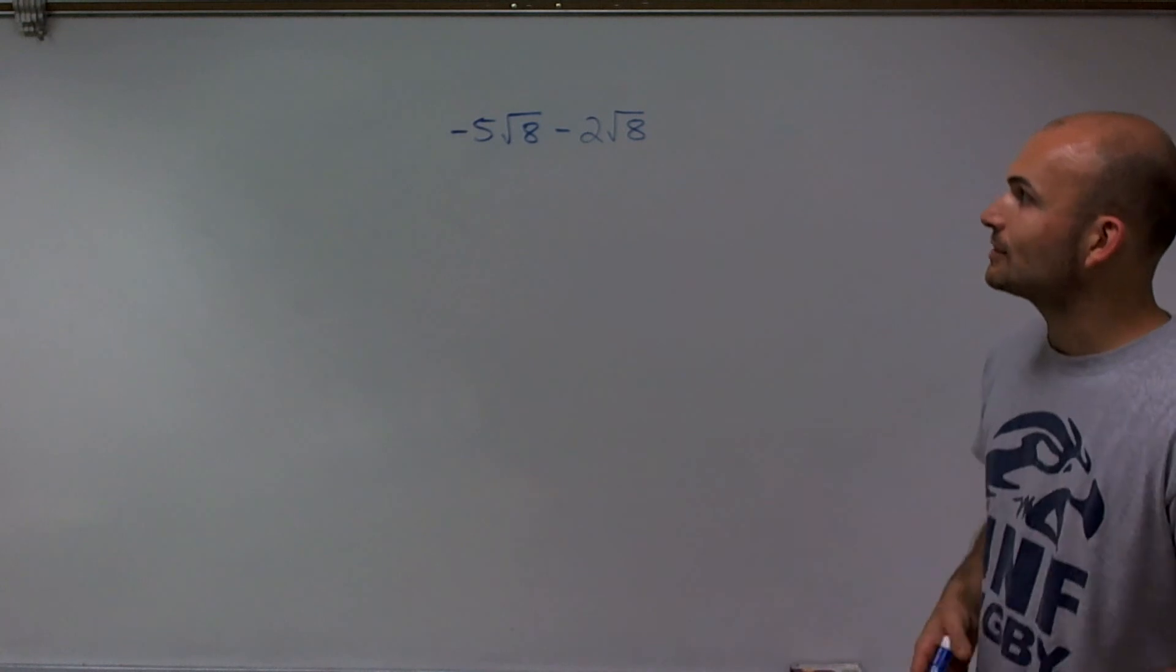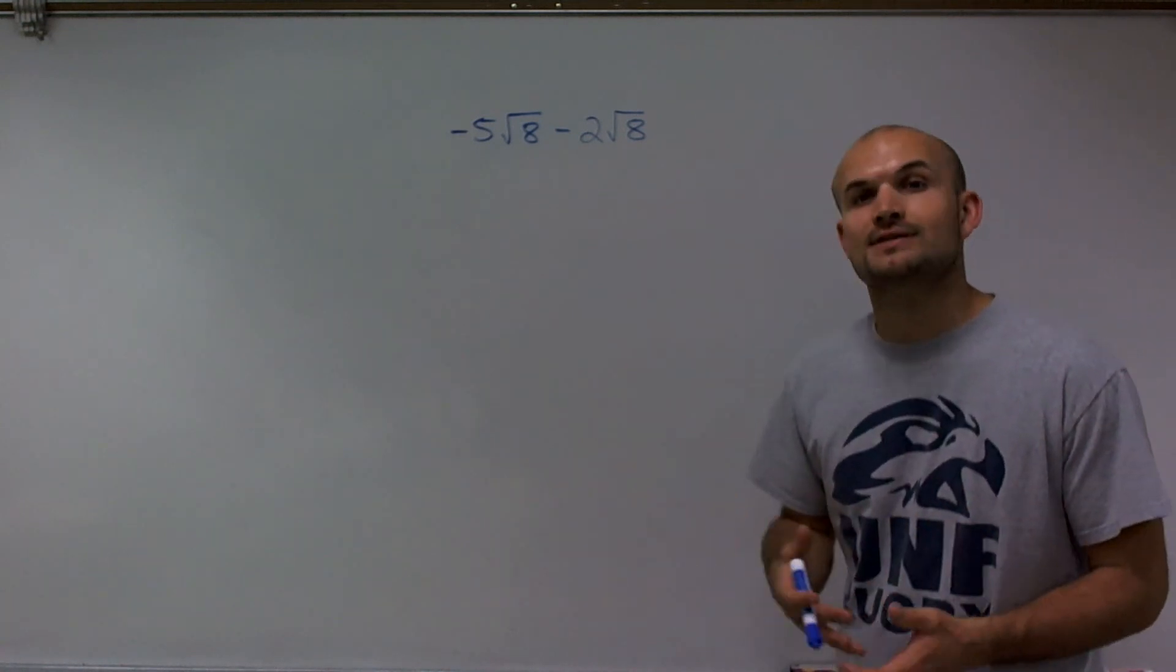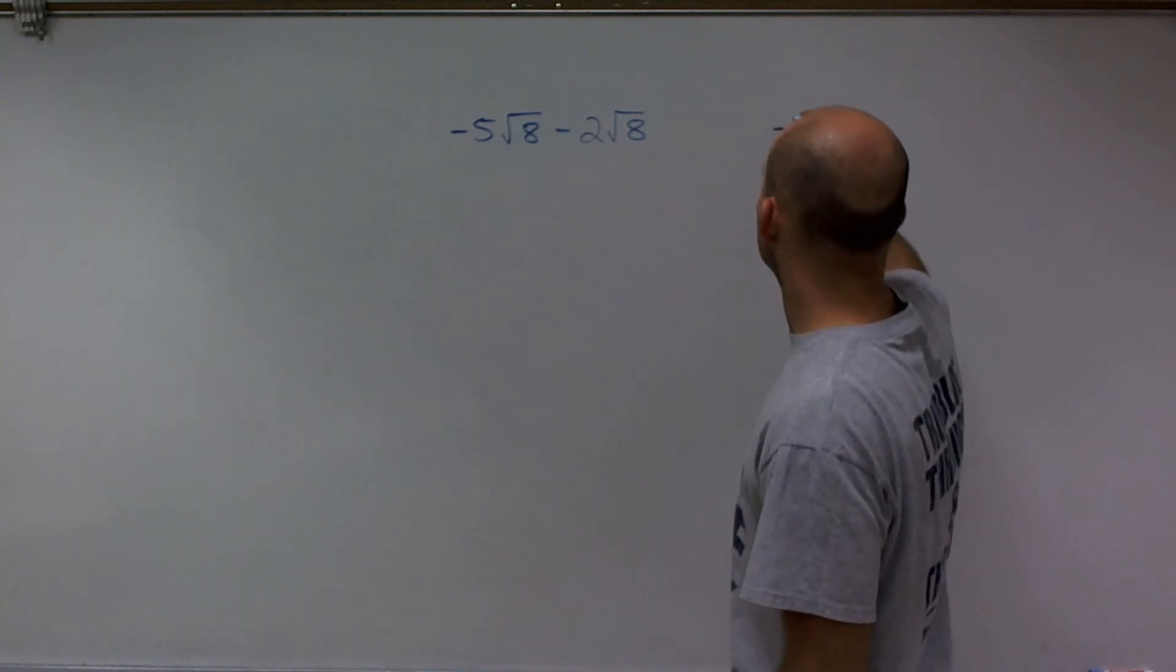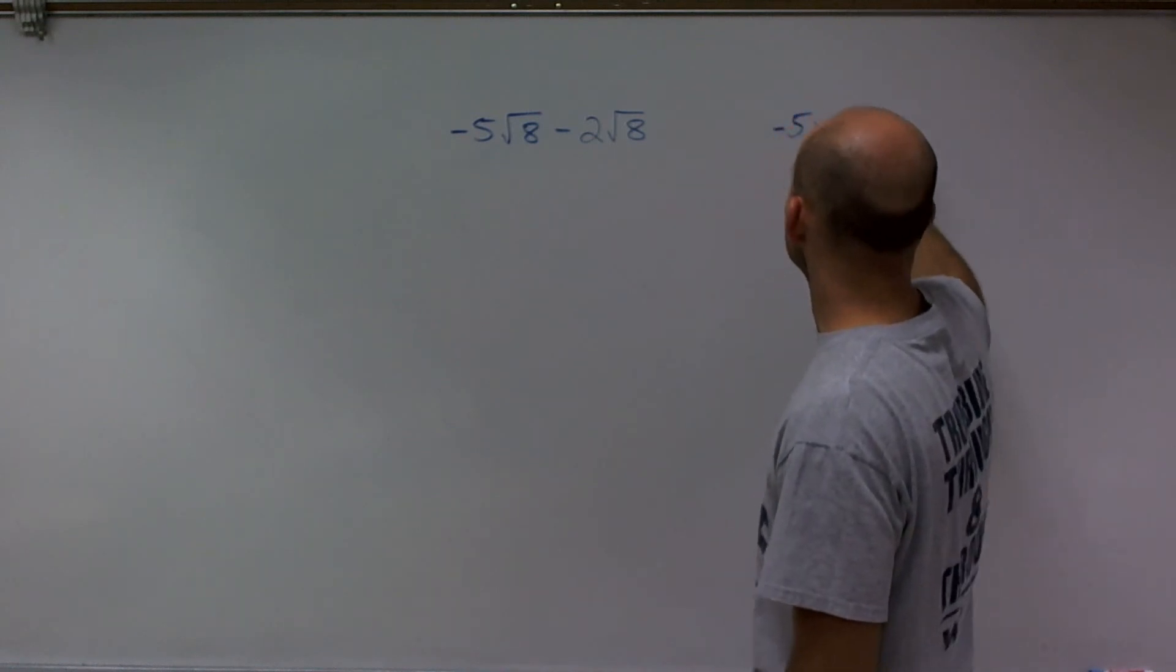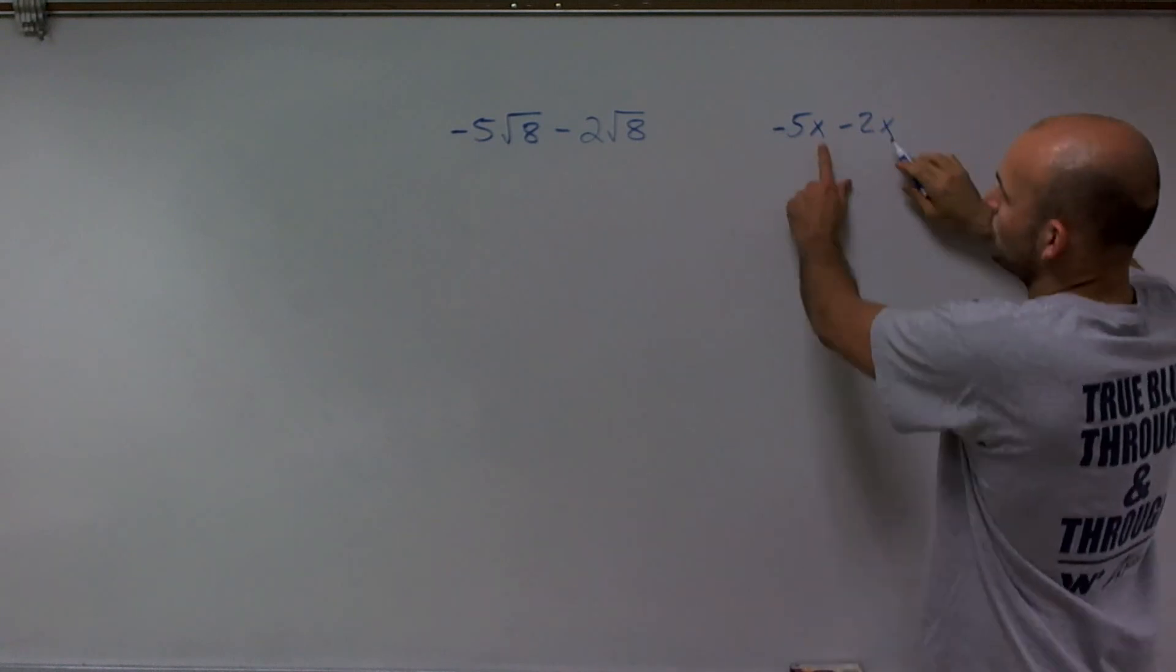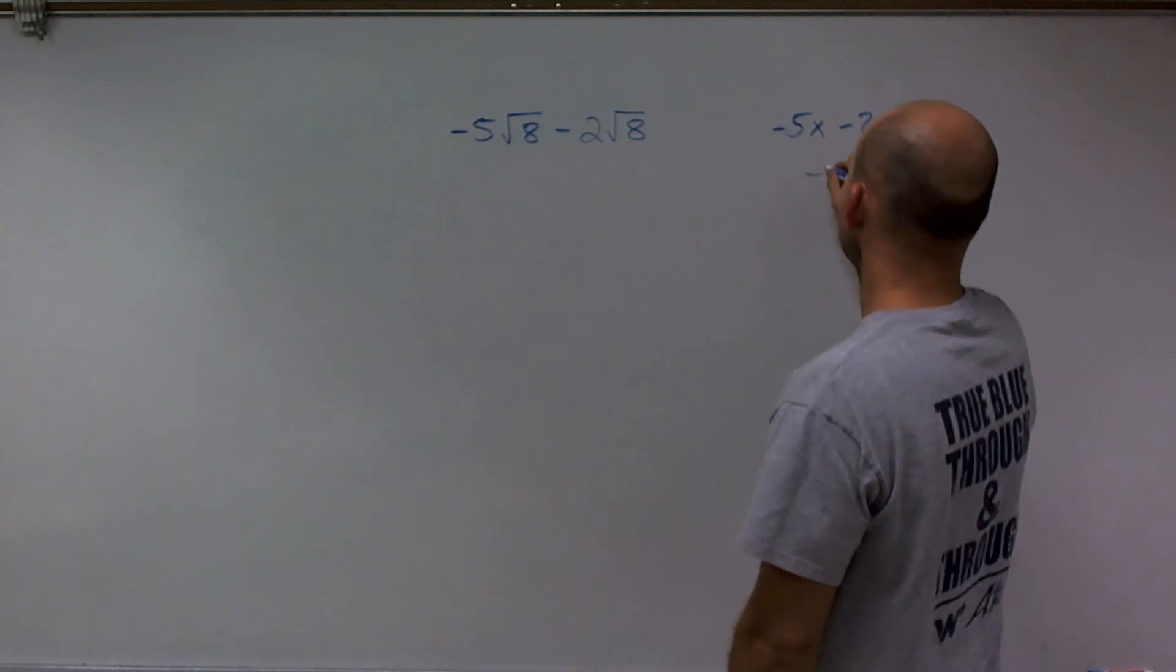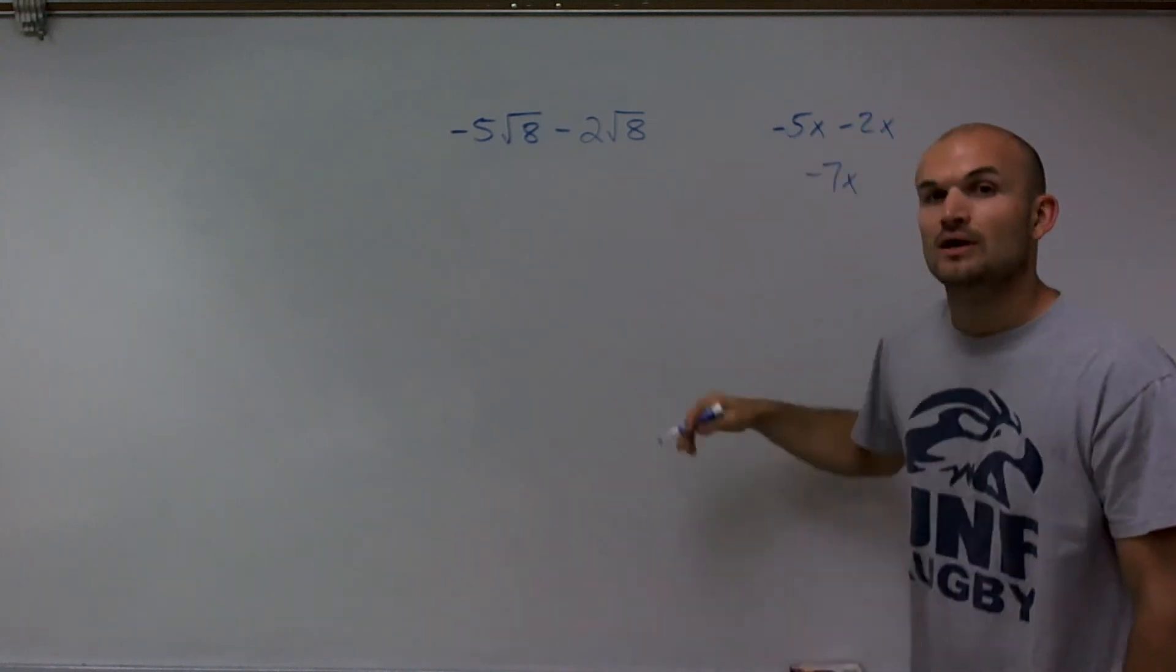So when simplifying radical expressions, it's very important for us to understand when we have like terms. Just like when we were dealing with variables, if I had negative 5x minus 2x, since we were both dealing with our x as our terms and they are the same, we had like terms, we could combine this to get negative 7x.